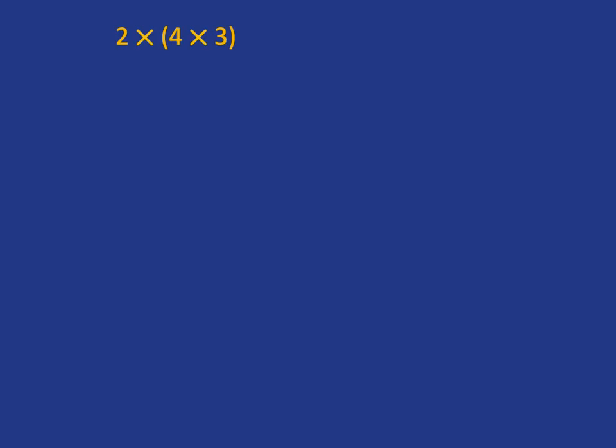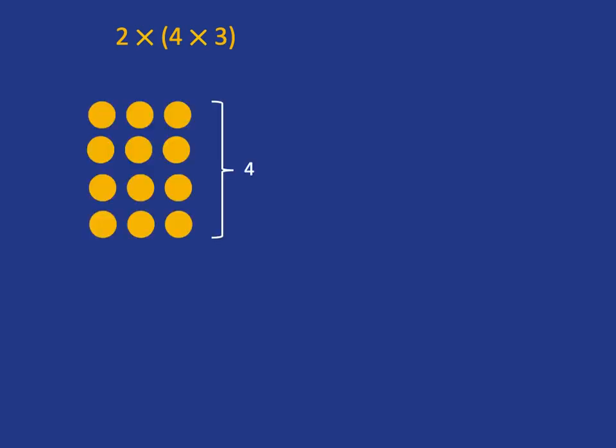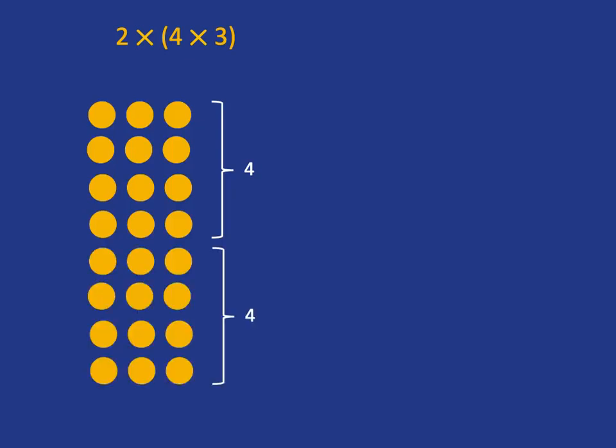Another law we can look at is as follows. Let's look at if we have 2 multiplied with 4 times 3. Well, that means we've got 2 lots of 4 times 3. What does 4 times 3 look like? Well, 4 times 3 is 4 lots of 3. And we've now got 2 of these, 4 lots of 3. So we've got 2 lots of 4 lots of 3. And so we can see quite easily from that picture that what we've got is 8 lots of 3.